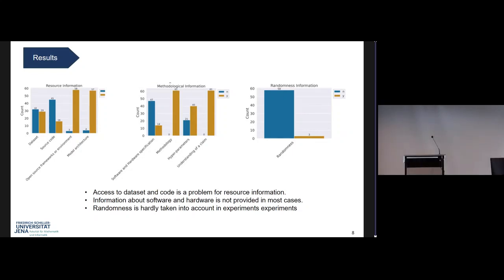Hyperparameters, as we all know, are one of the important aspects for training deep learning models. 21 papers out of 61 have provided no information or only partial information about this. When we come to the randomness information, it is seen that only three papers considered randomness to be an important factor for reproducibility.